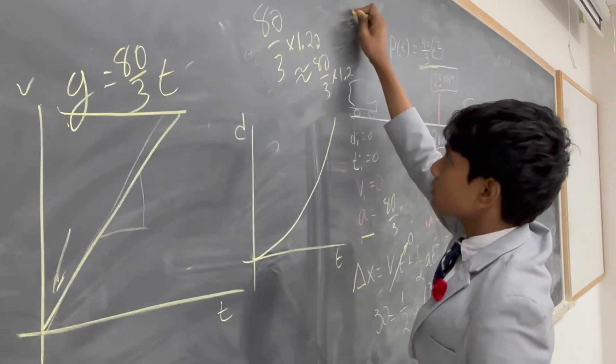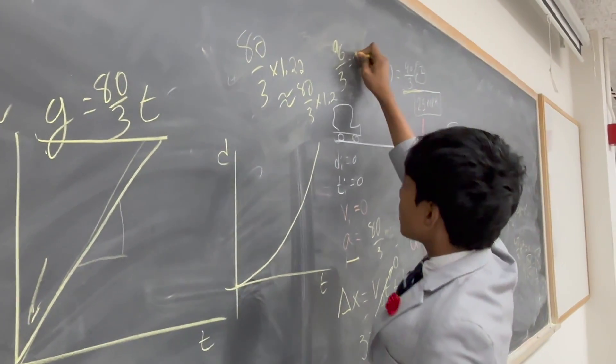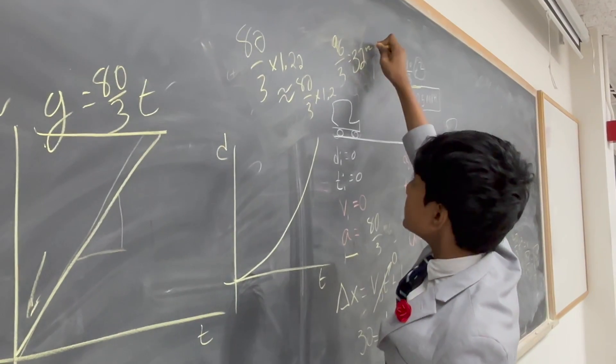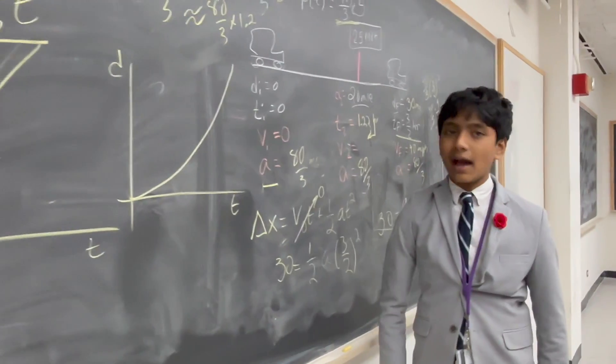So, now, we know that's 8 times 12 over 3, which is just 96 over 3. And what is that? 32 MPH. Wow. He broke the law by a lot. Mr. Berry is not going to be happy.